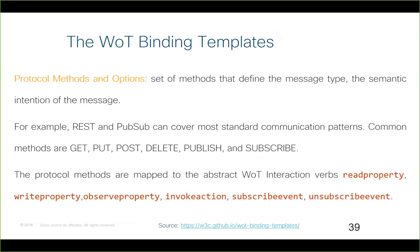Protocol methods and options define how your message type and the semantic intention of the message. For example, in the REST architecture style, you use GET, PUT, POST, DELETE. If using publish-subscribe, you use publish-subscribe methods. You can also map to Web of Things interaction verbs: 'read property' maps to GET, 'write property' maps to POST. If you want to subscribe to a specific property, you use 'subscribe property' or 'unsubscribe'. You specify which kind of methods and options you want in your protocol.